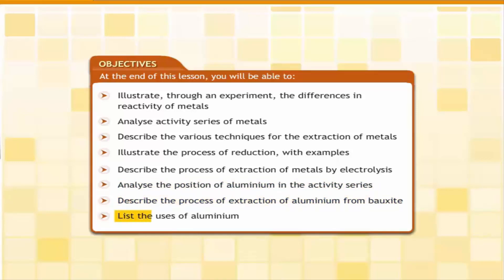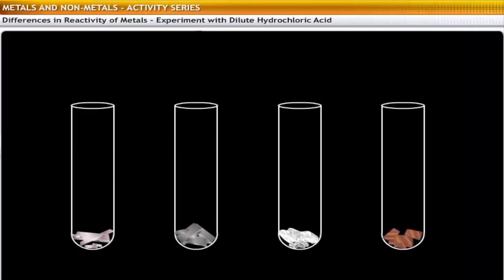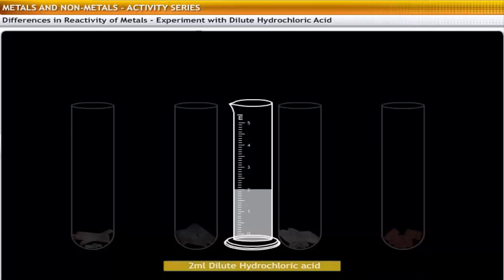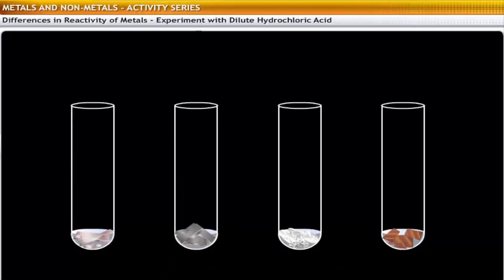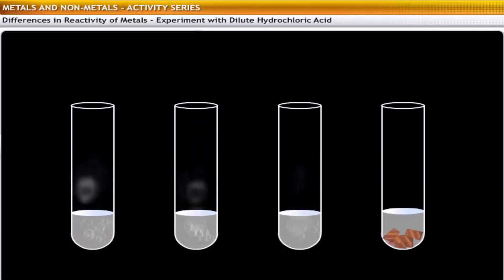You will also analyze the position of aluminium in the activity series, describe the process of extraction of aluminium from bauxite, and list the uses of aluminium. You can observe the differences in reactivity of various metals through an experiment. Take samples of four metals — sodium, magnesium, calcium and copper — in different test tubes. Add 2 ml of dilute hydrochloric acid or sulphuric acid to each of these samples. The reaction of the acid with the metal will yield a salt and hydrogen gas in each test tube.